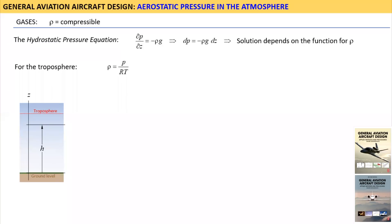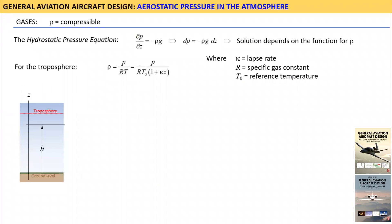One way to convert this expression into one that changes with altitude is by using an atmospheric model such as the US Standard Atmosphere 1976. This model approximates the temperature change that takes place with elevation using the linear expression shown.